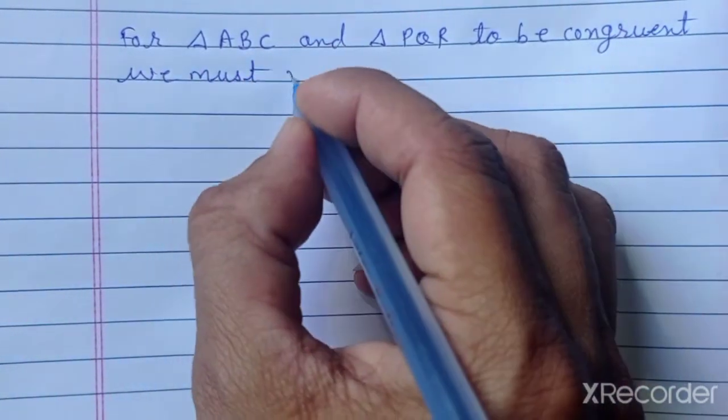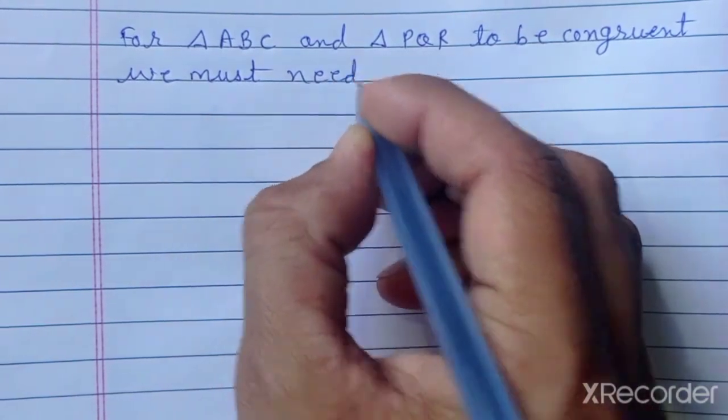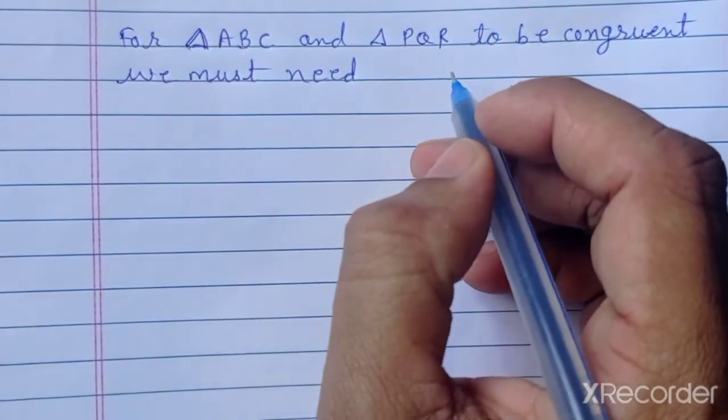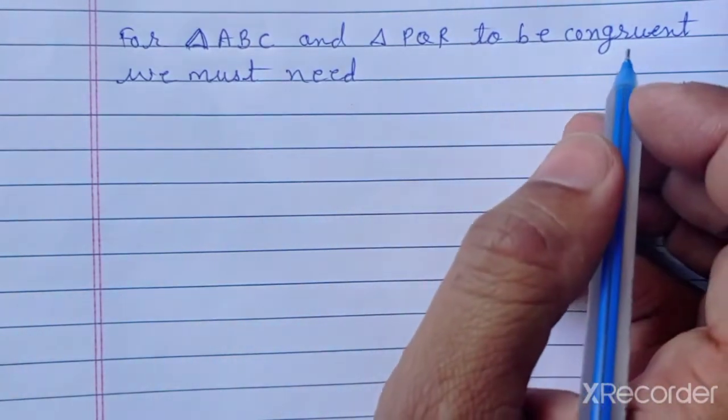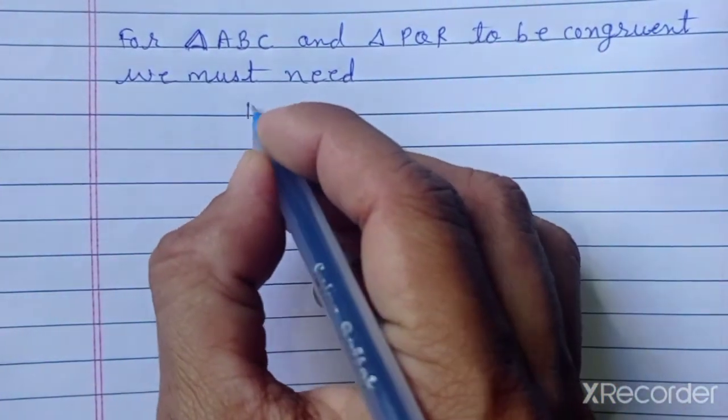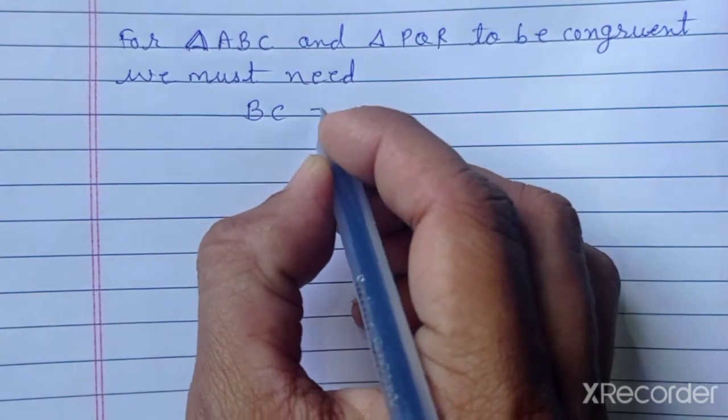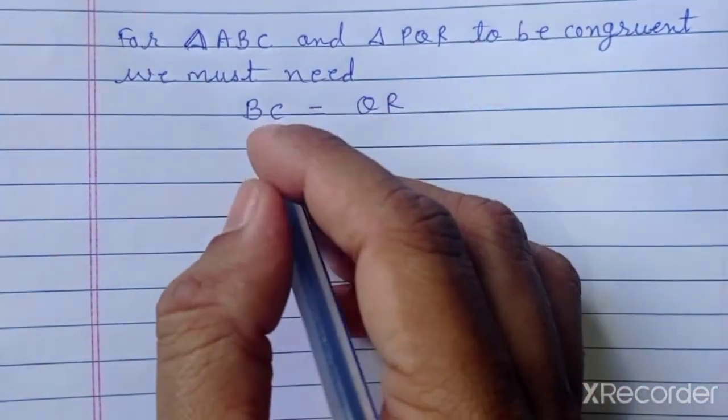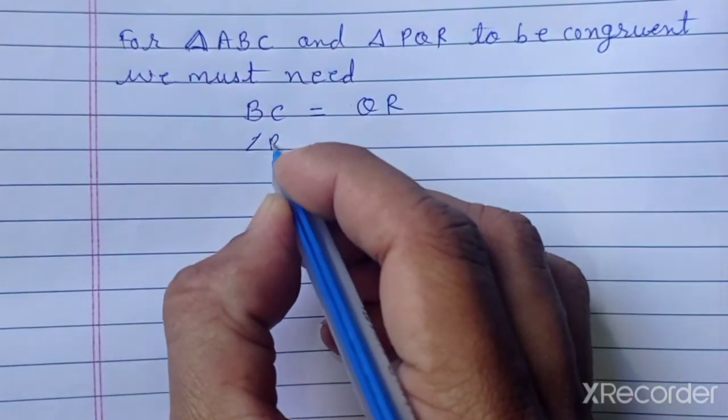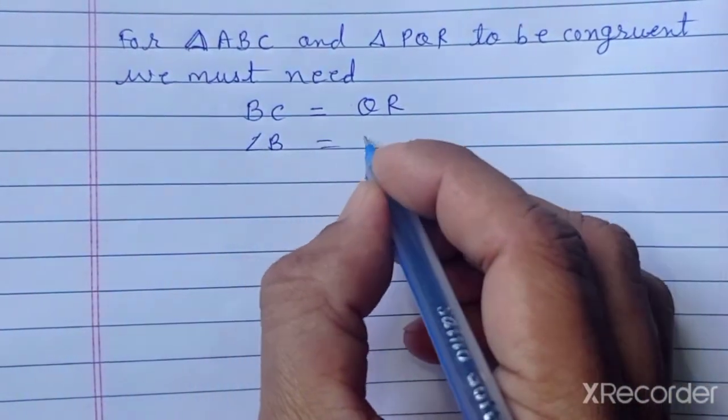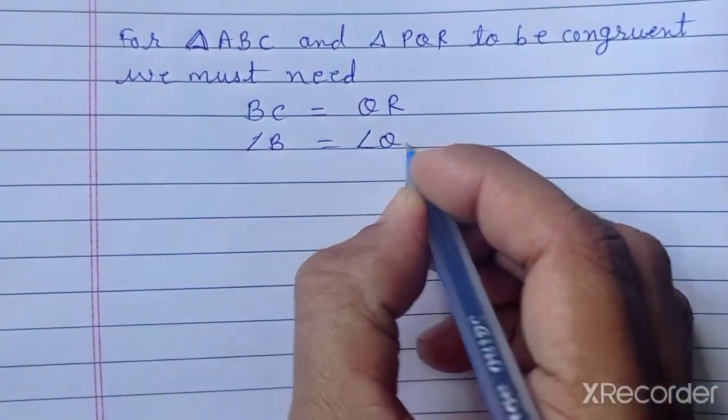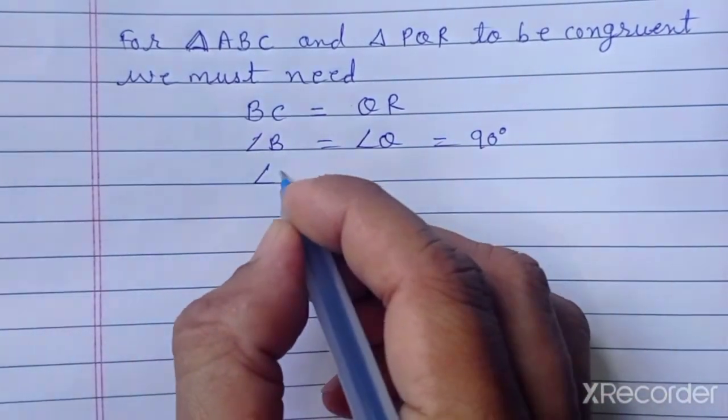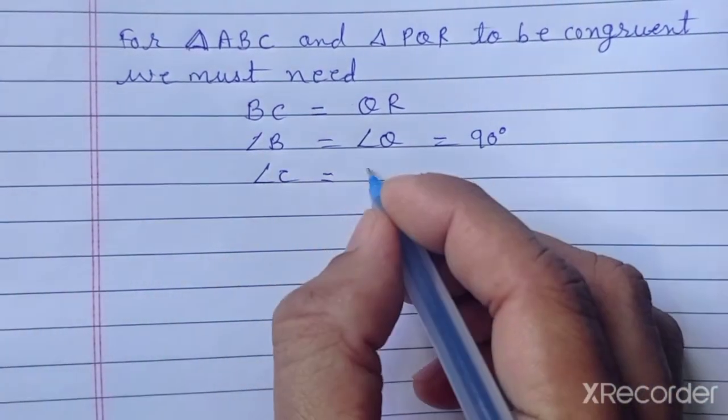For triangle ABC and triangle PQR to be congruent, we must need BC equals QR, angle B equals angle Q which is 90 degrees, and one angle C equals angle R.